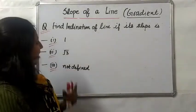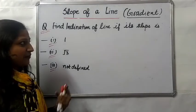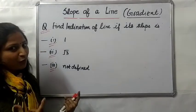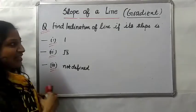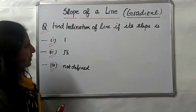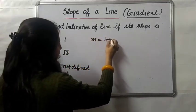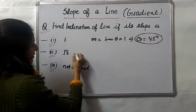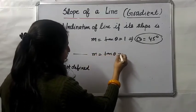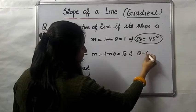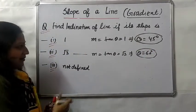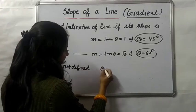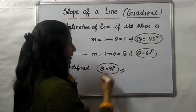Next question: find the inclination of a line given its slope — this is the reverse problem. Case 1: m = 1, tan θ = 1, so θ = 45°. Case 2: m = √3, tan θ = √3, so θ = 60°. Case 3: slope is not defined, so θ = 90°.